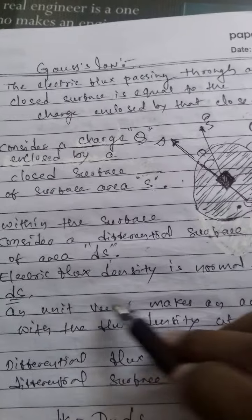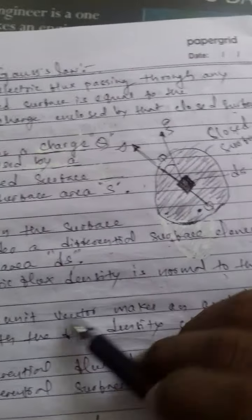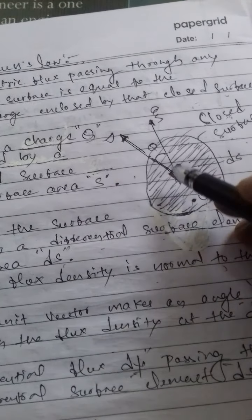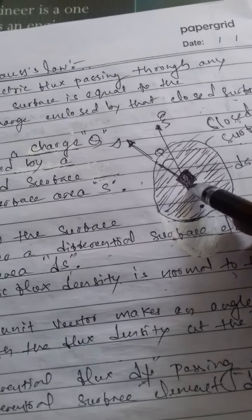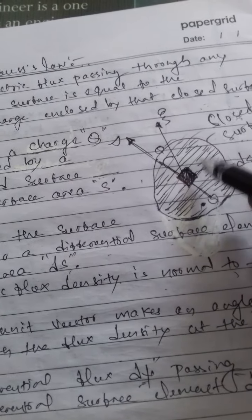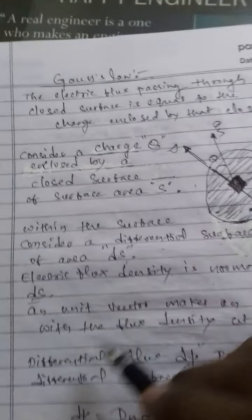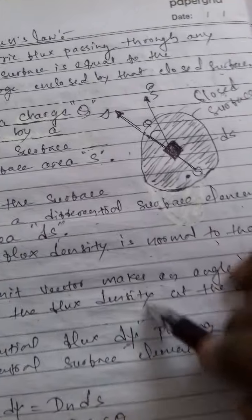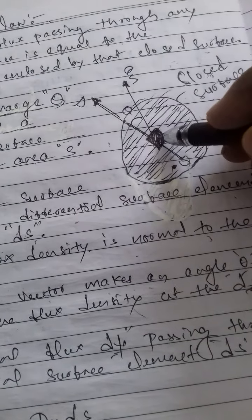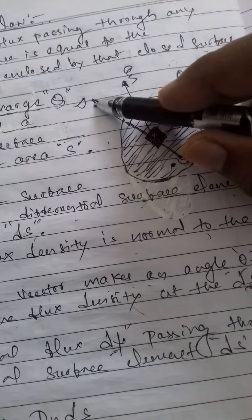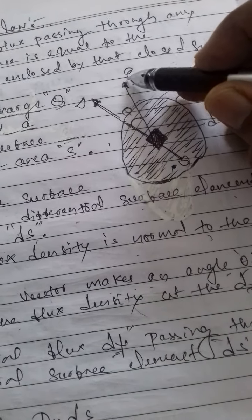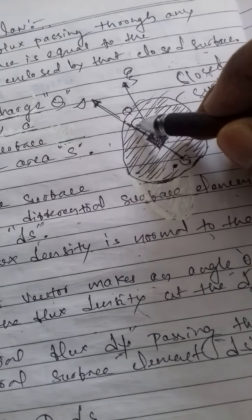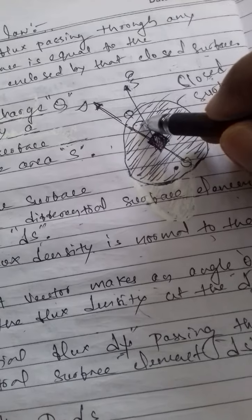The electric flux density D is normal to the differential surface element dS considered on the closed surface. A unit vector aₙ makes an angle theta with the flux density D at the element dS.